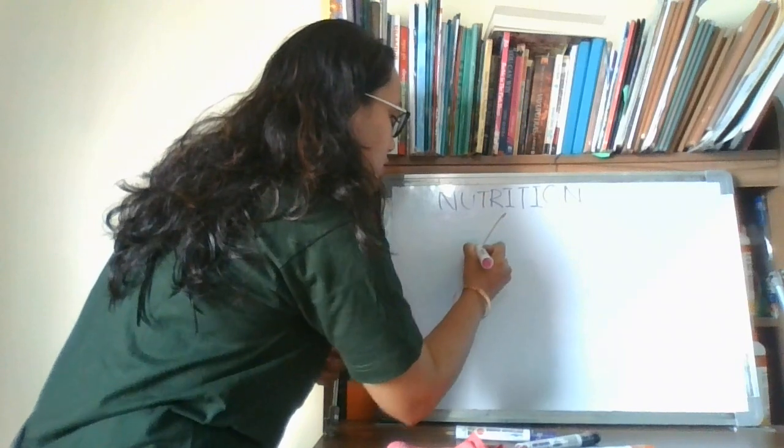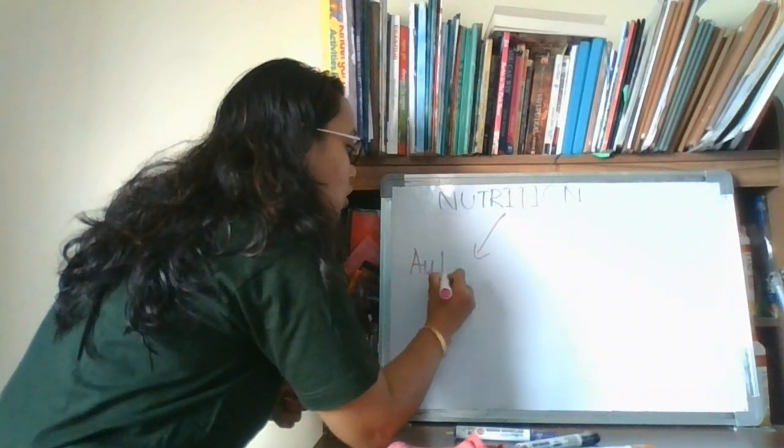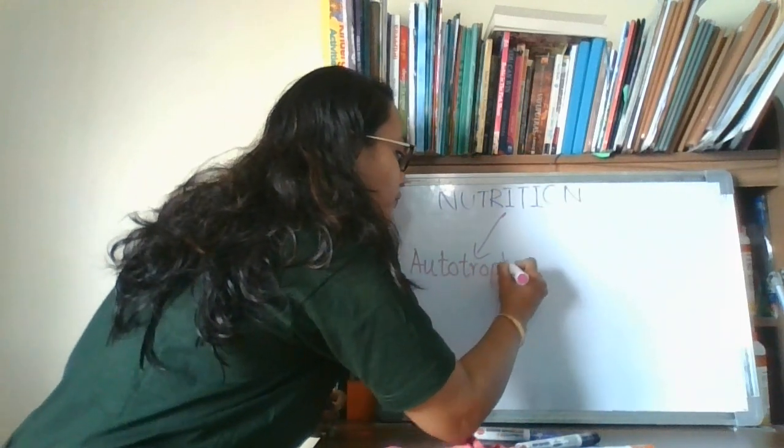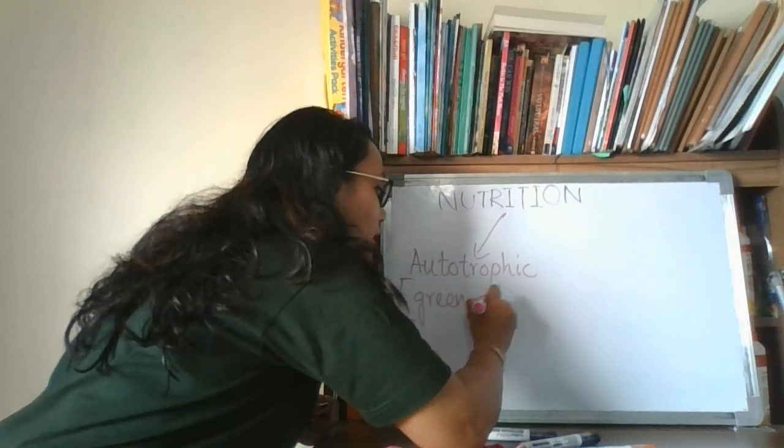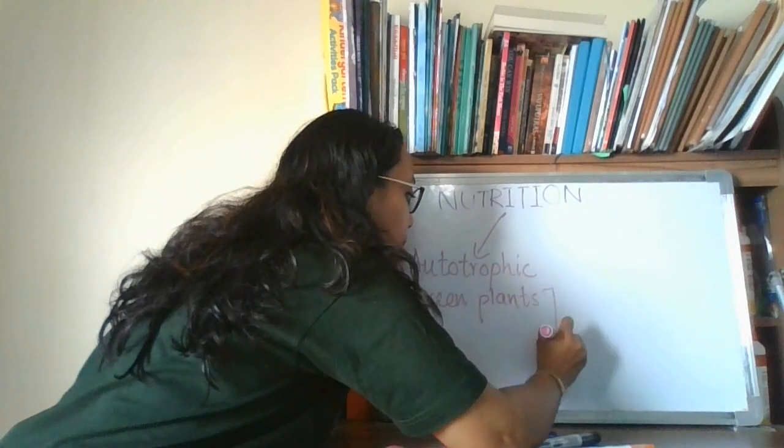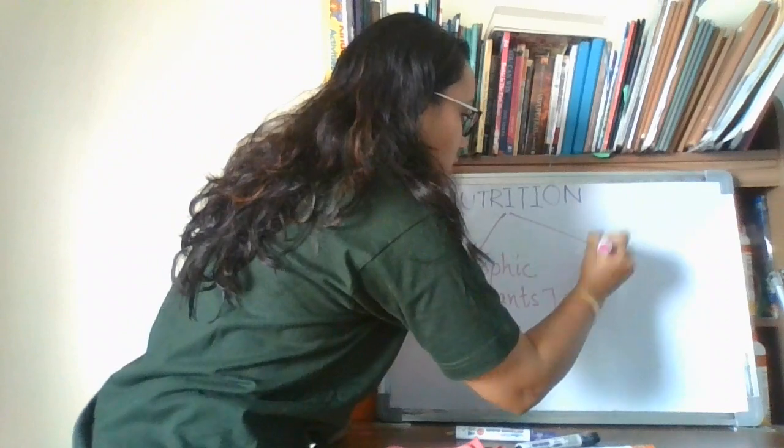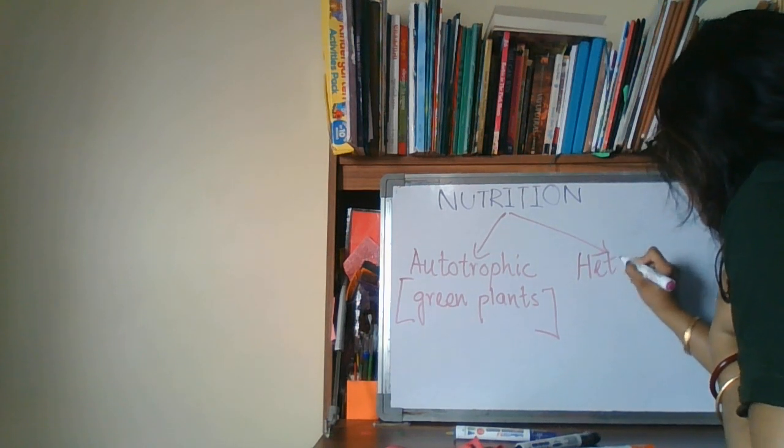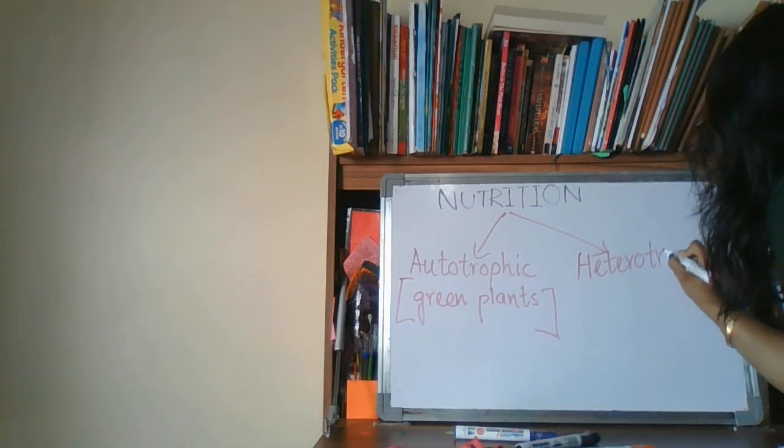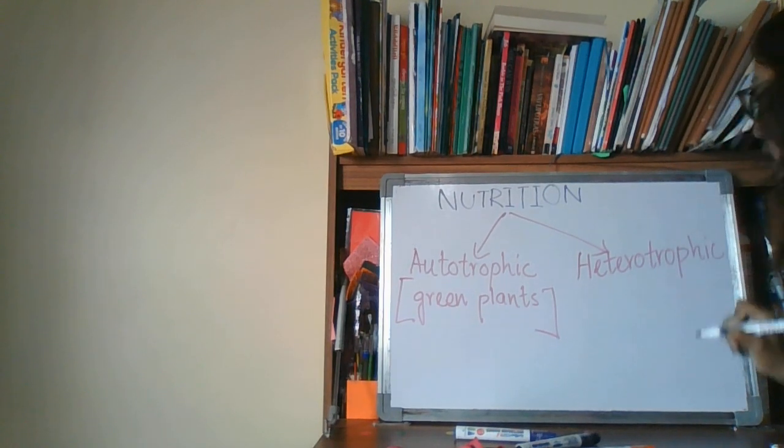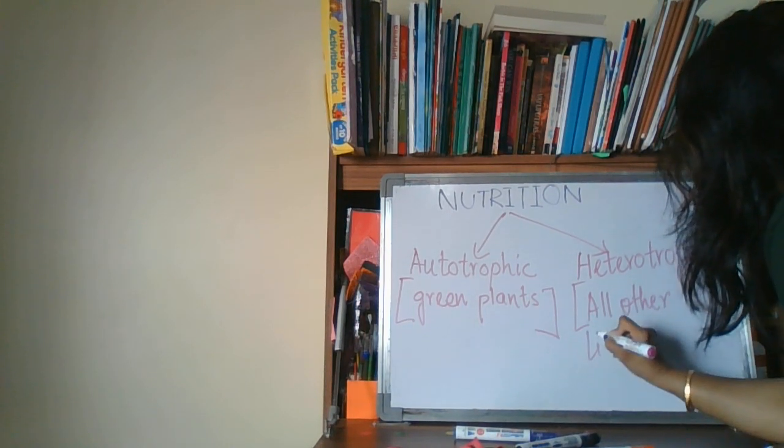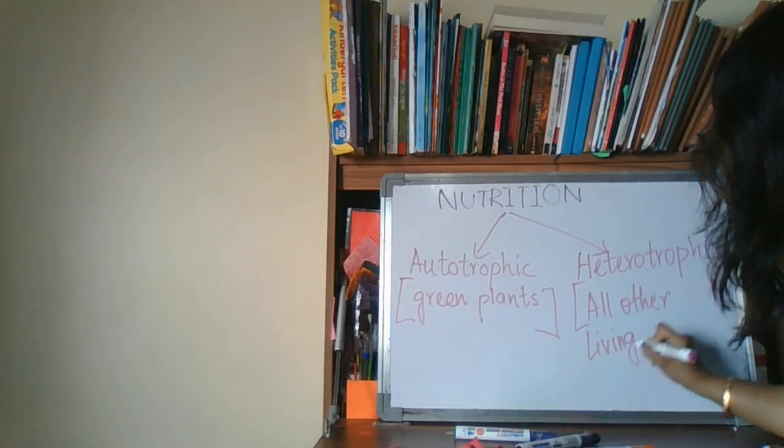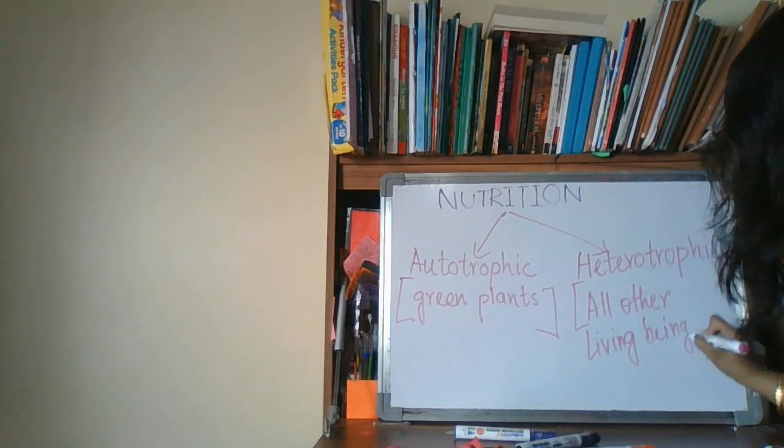So, let's have a look. Nutrition: the first category we can call it autotrophs. Autotrophic nutrition. For example, the green plants will come under this category. And the second kind of nutrition is heterotrophic nutrition. All other living beings depend on plants for their food. And so, they are called heterotrophs.